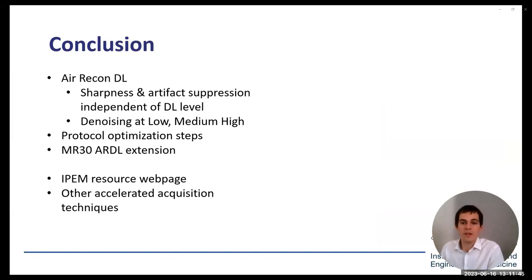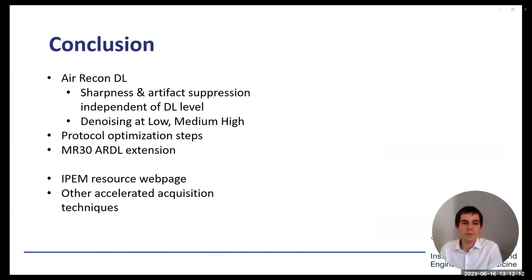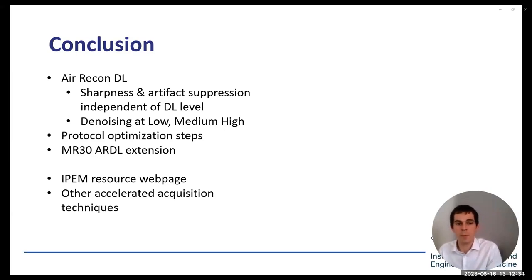In conclusion, Air Recon DL improves sharpness and Gibbs suppression independently of DL recon level — even at the lowest level you benefit substantially from improved resolution and Gibbs suppression. Denoising at low, medium, and high is up to users to select the level their radiologists prefer. ARDL is available in two flavours: the 2D Cartesian version at DV29, and from MR30 an extension including 3D and propeller. IPEM webpage resources will be kept live and updated, and there are additional smaller advantages from parallel imaging, simultaneous multi-slice, AirX, and compressed sensing.